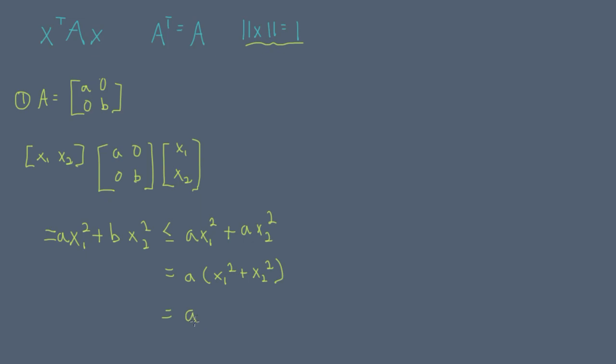In fact, the expression can achieve the value a at the vector x equals 1, 0. Thus, when we have a quadratic form and the matrix is diagonal, the largest value that the quadratic form will achieve is the largest diagonal value of a.